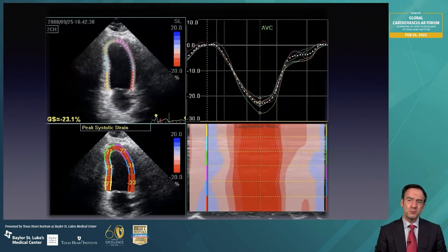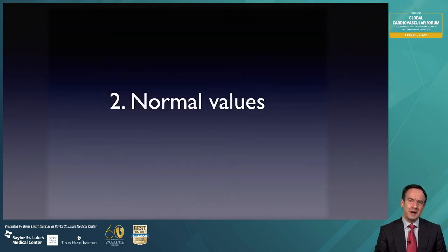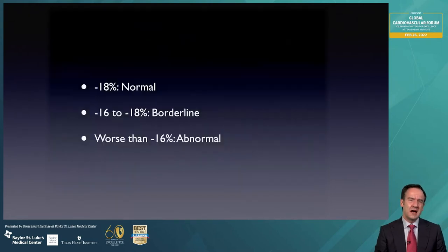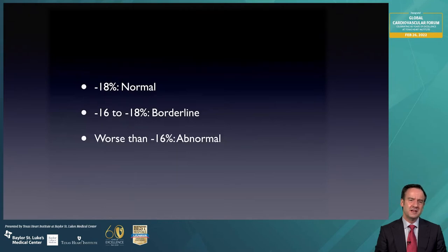Let's move to discuss the normal values, and this is important. What is considered normal in most labs in the United States and all over the world is more negative than minus 18 — that is normal. Between minus 16 and minus 18 is considered borderline, and worse, i.e., less negative than minus 16, would be considered abnormal.